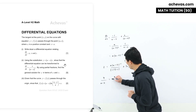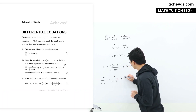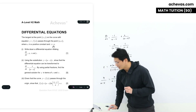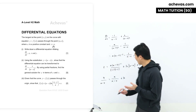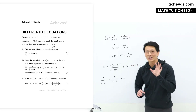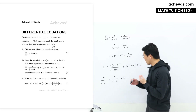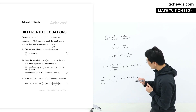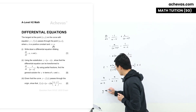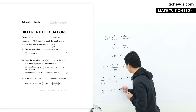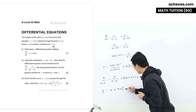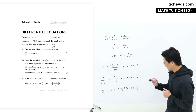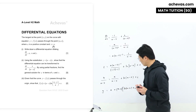Simplifying: y over (a - x) = a over (a - x) + ln|a - x| + C. Since x is less than a, the expression (a - x) is always positive, so the modulus is redundant and can be removed. Multiplying throughout by (a - x): y = a + (a - x)[ln(a - x) + C]. This is my general solution for y.